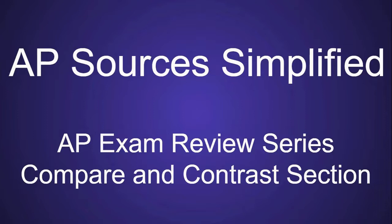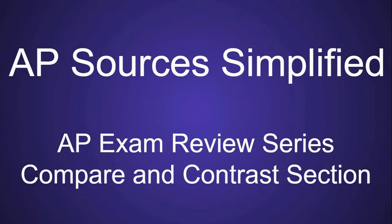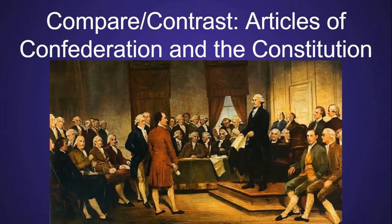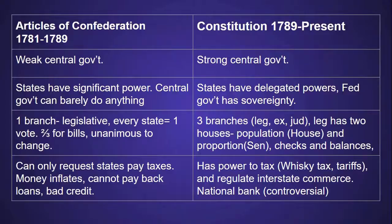Welcome to AP Sources Simplified. We are nearing the end of our AP exam review series. Today we are looking at the only governments the USA has had — the failed Articles of Confederation and our current government under the Constitution — for a brief overview of the differences with some key details, great to use in an APUSH essay.